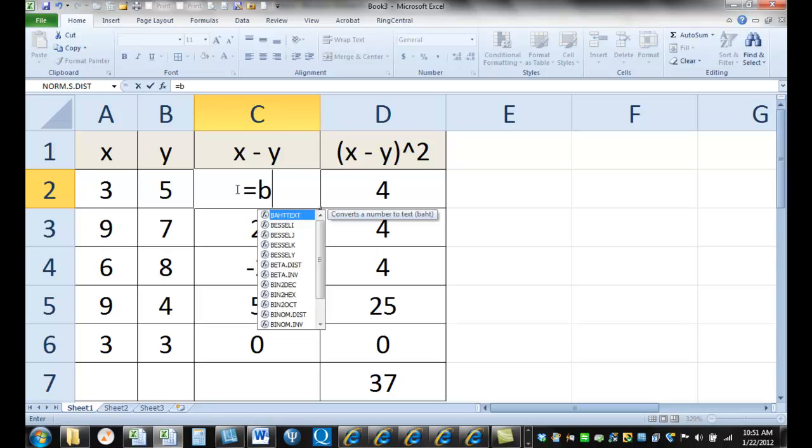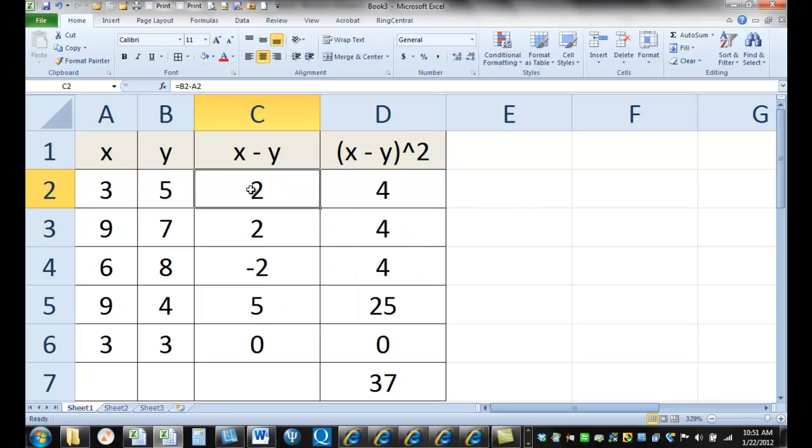That's equal to B2 minus A2. Now we reverse the subtraction. Let's copy that. Copy. Paste. And our sum is still 37, even though the negative values have all changed here.